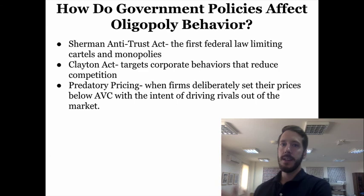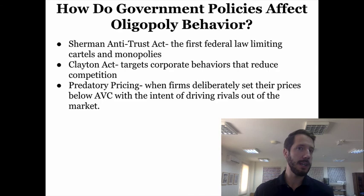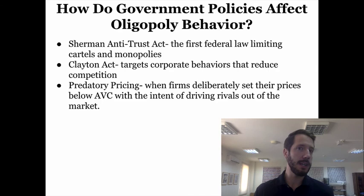Governments use several tools to make sure that collusion and cartels don't occur — there are three different measures here, which are fairly U.S.-centric. It's important to know them in case you get a question on the AP test. And that is all we have for our third unit on the theory of the firm and oligopolies. Hope you learned something you didn't know before. Thanks for watching.